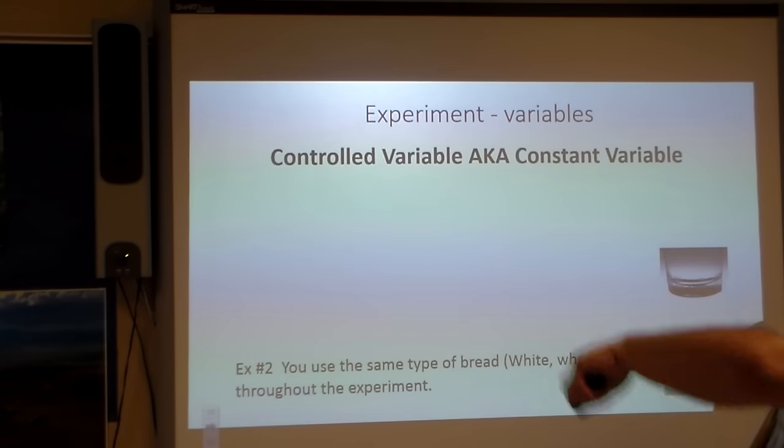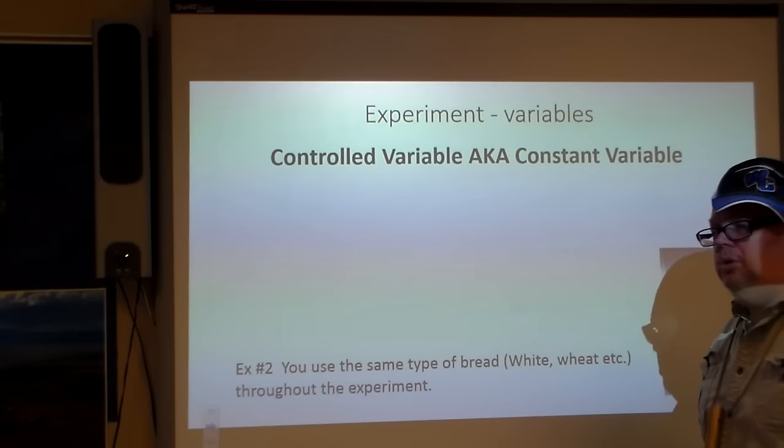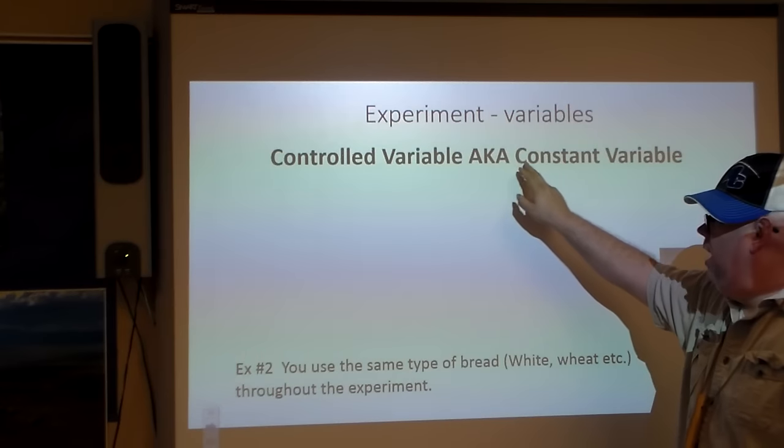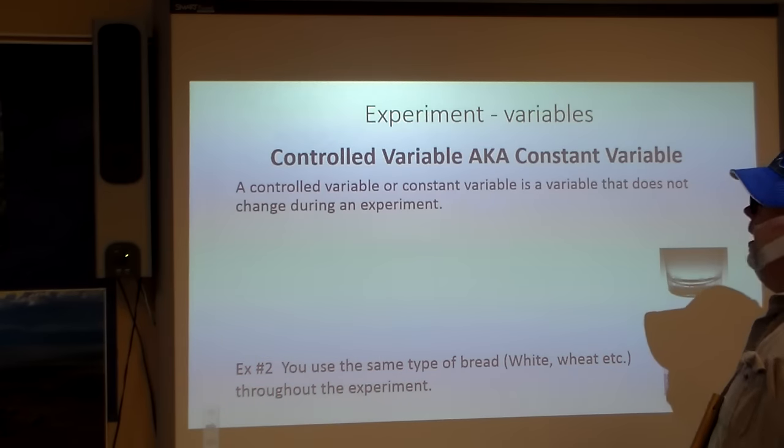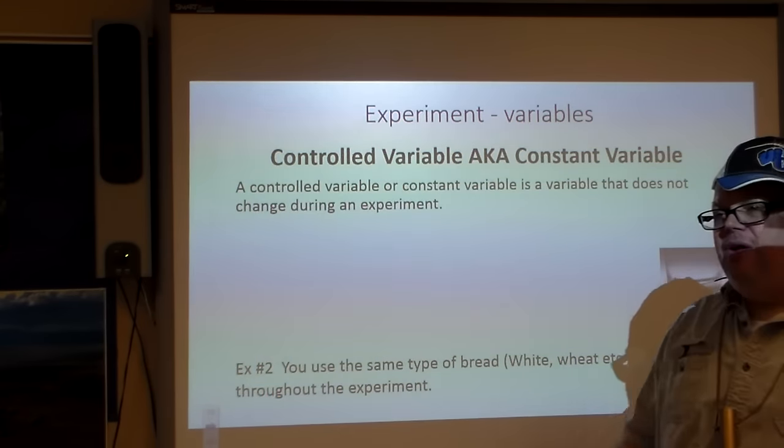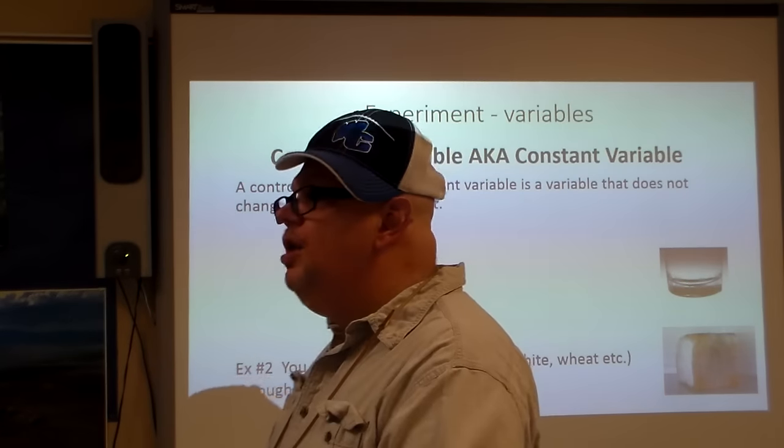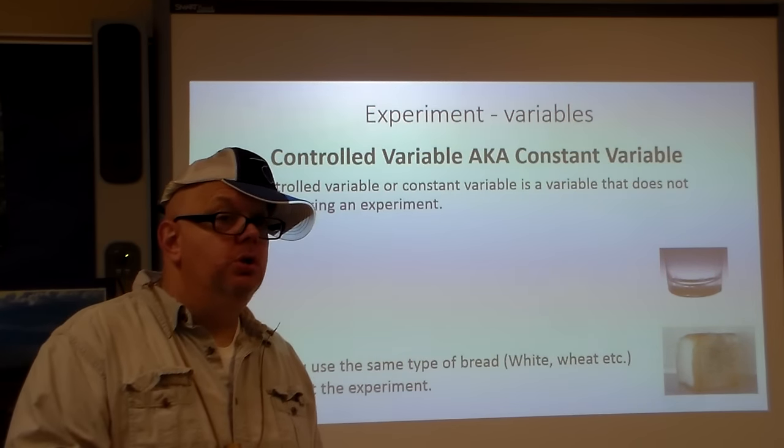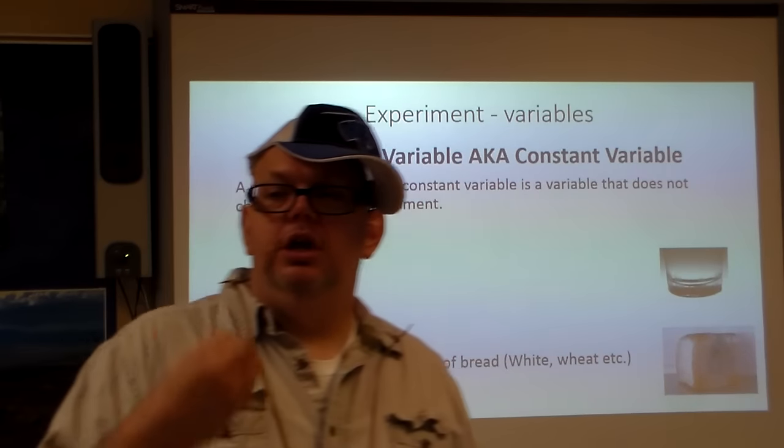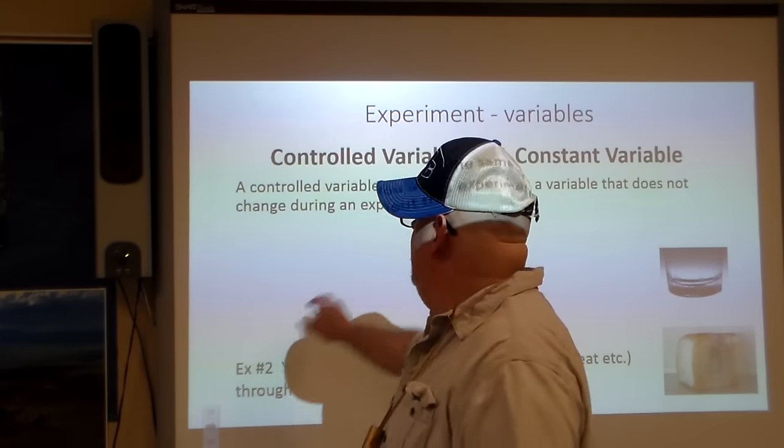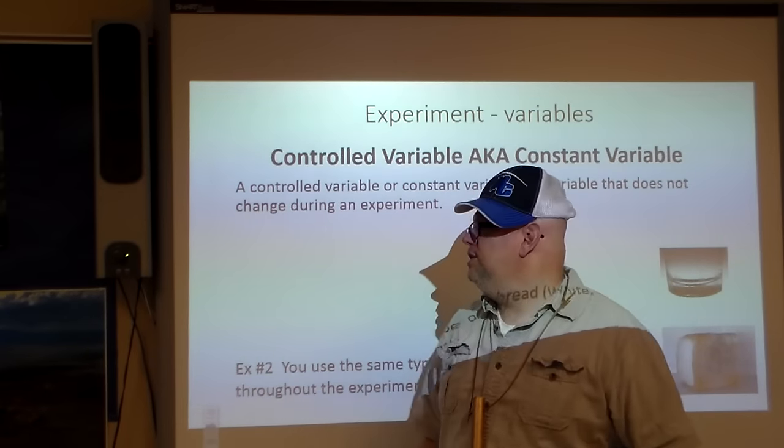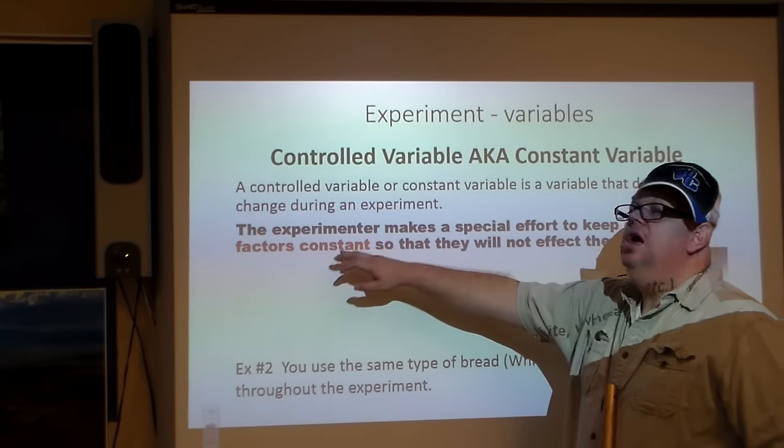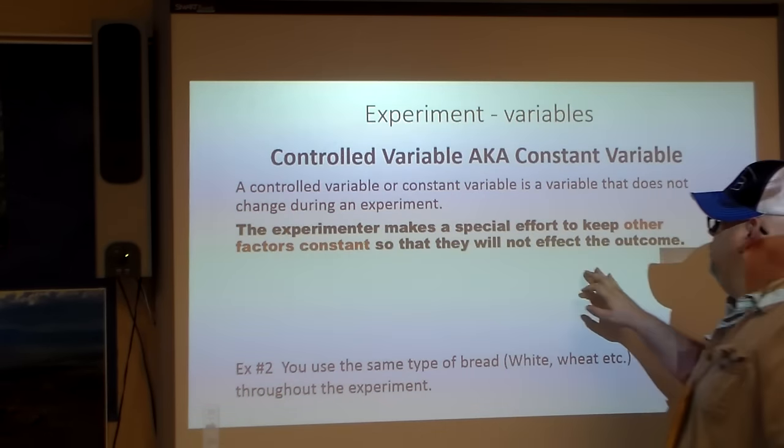So a controlled variable, also known as constant variable. Here's the idea: this is the variable that does not change at all during the experiment. There are variables we can change, like the independent variable, but there is also the controlled variable where you cannot change that in an experiment.